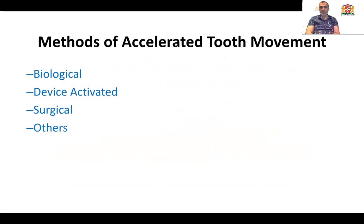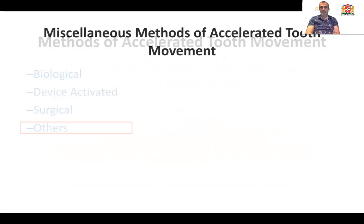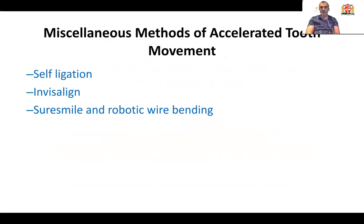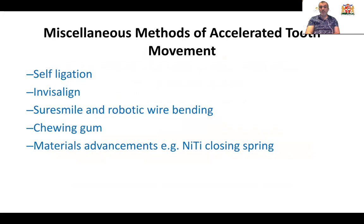The question is how we can actually accelerate tooth movements. There are other techniques — for example, self-ligation, where there is a claim that it will reduce treatment duration; Invisalign, which may be associated with shorter treatment duration; robotic wire bending or customized appliances such as SureSmile or Insignia; chewing gum; material advancements such as nickel-titanium closing coil springs during space closure; and finally, 3D diagnosis and planning.